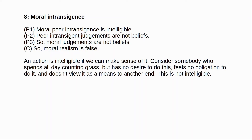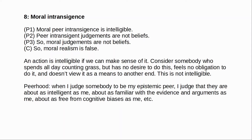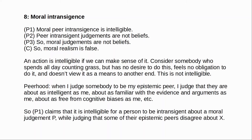When I judge somebody to be my epistemic peer, I judge that they have access to pretty much the same evidence as me, that they're about as intelligent as me, about as free from cognitive biases as me, and so on — basically, my epistemic peers are those who are in just as good a position as I am to get the facts right. So when we say moral peer intransigence is intelligible, the claim is that it's intelligible for a person to be entirely intransigent about some moral judgment p — that is, they can judge that p with as much confidence as before, while also judging that a significant number of their epistemic peers disagree about p. For instance, suppose I believe that abortion is permissible. I might then come to believe that there are a significant number of people who are just as well-informed and just as intelligent as I am, who believe that abortion is impermissible. And this need not alter my judgment about the moral status of abortion at all.